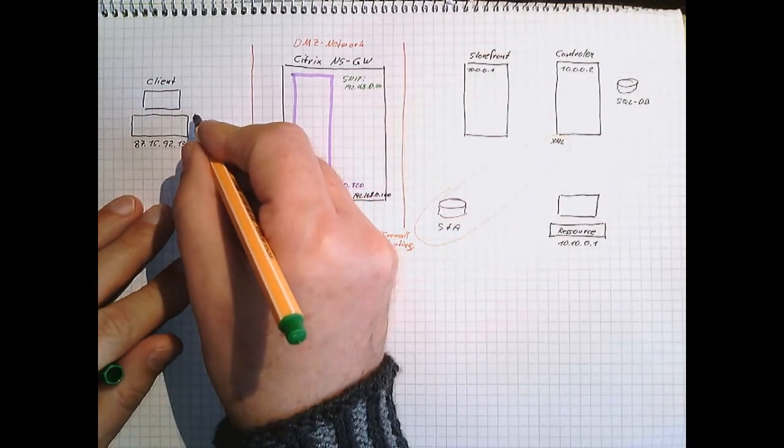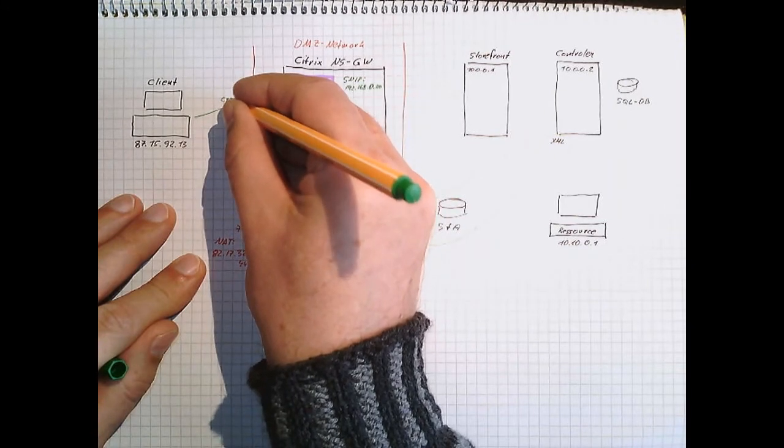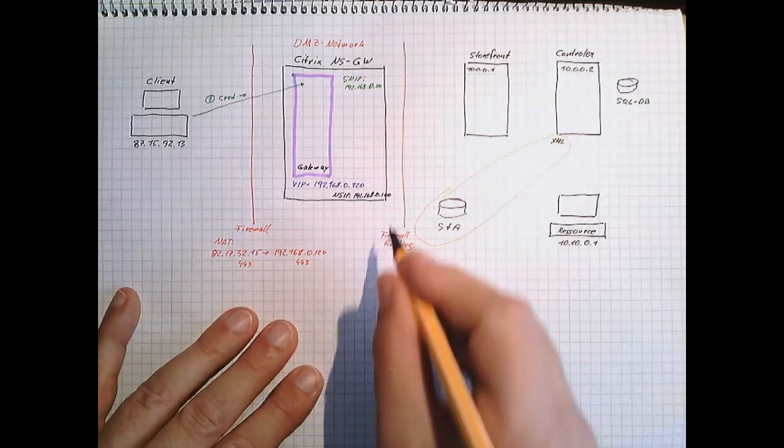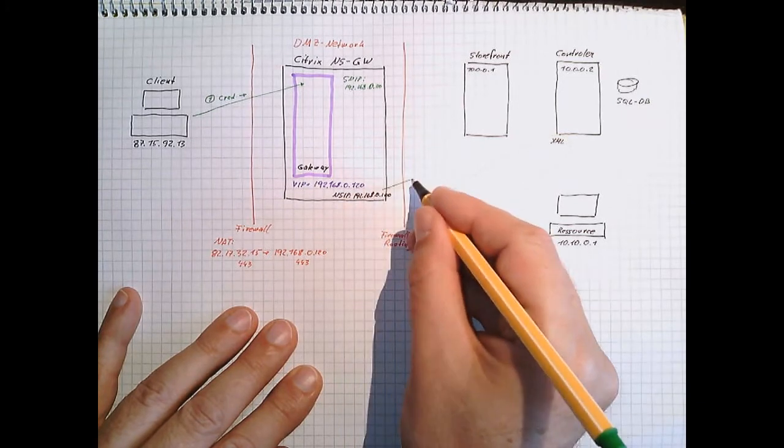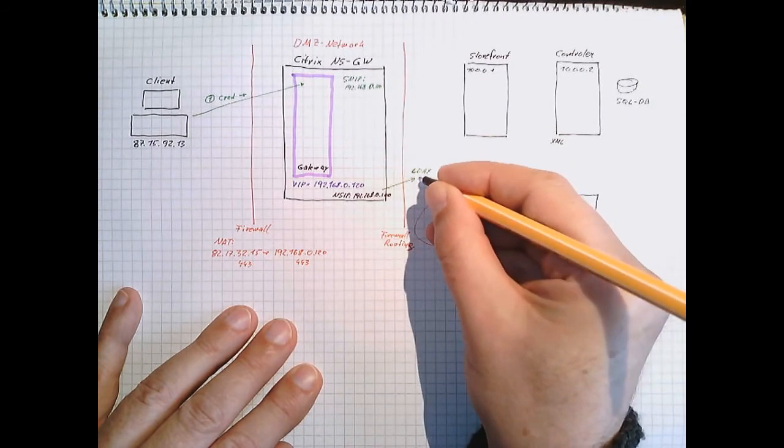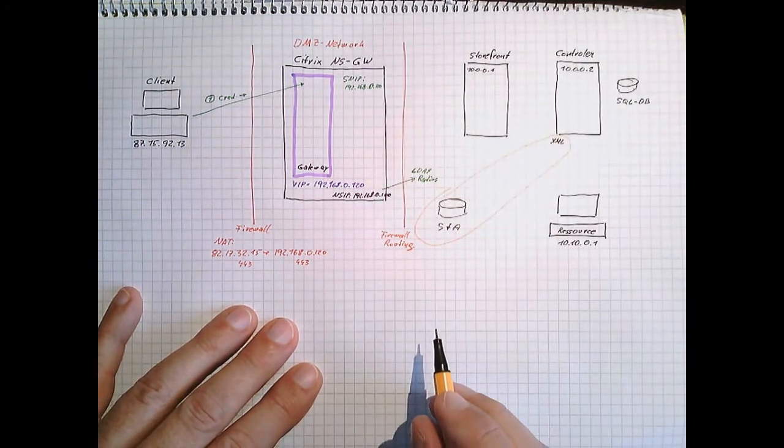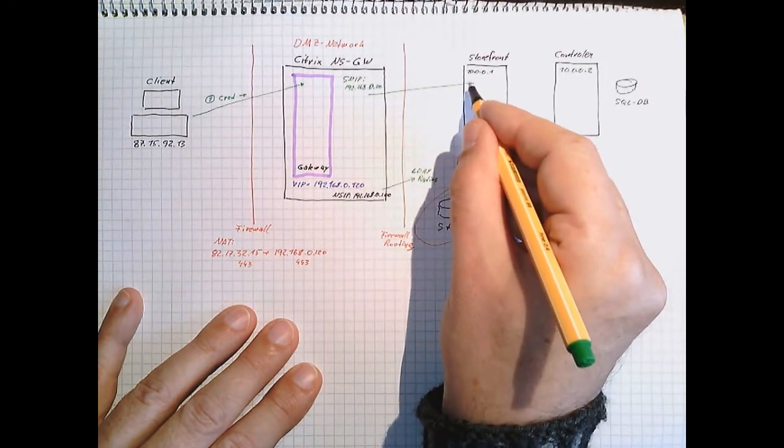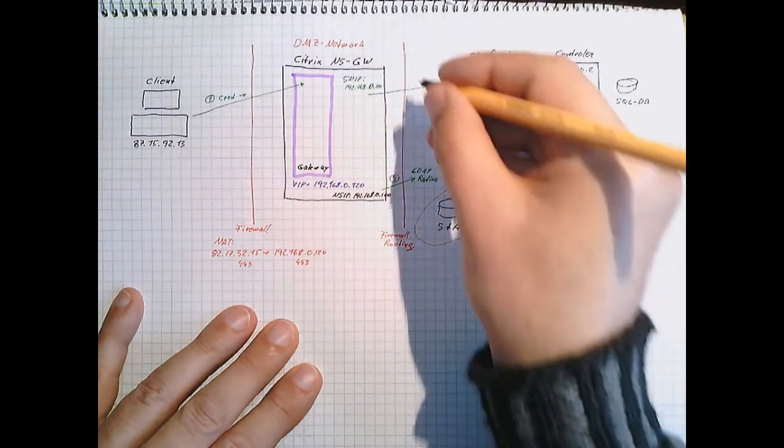So now my user is connecting to the NetScaler gateway. This is connected via the firewall. And the user is sending credentials to the NetScaler gateway. Next number two. The NetScaler will send credentials from NetScaler IP address to LDAP or RADIUS. So the user gets authenticated. This is number two. Next from subnet IP address to storefront. We will send credentials. This will be number three.